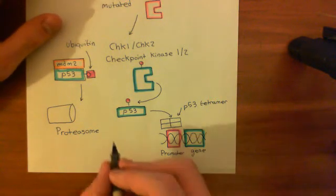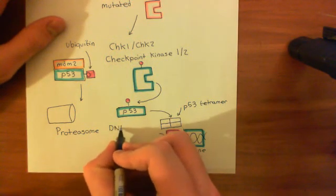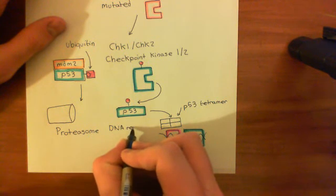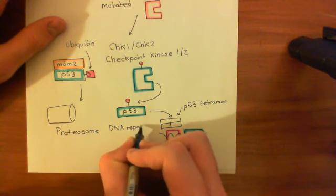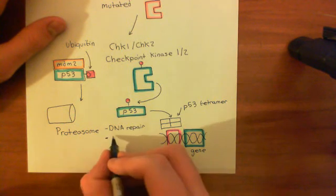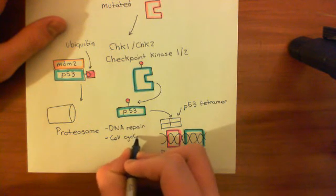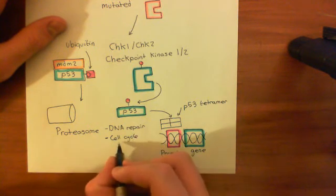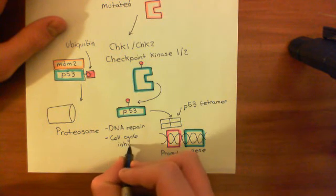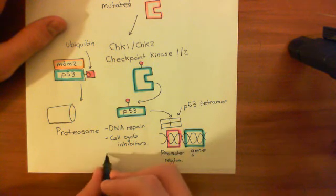Well, basically, it's firstly going to increase the expression of the proteins involved in DNA repair, which makes sense. So it's going to try and repair the damage to the DNA. It's also going to give rise to proteins which are going to halt the cell cycle. So cell cycle stoppers, basically. Cell cycle inhibitors. So it's going to stop the cell from being able to divide.